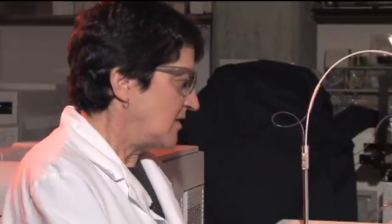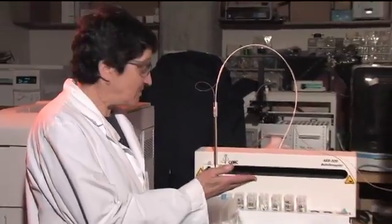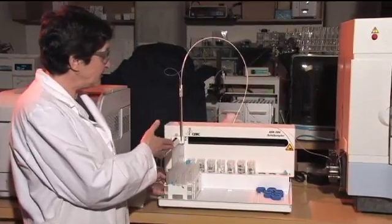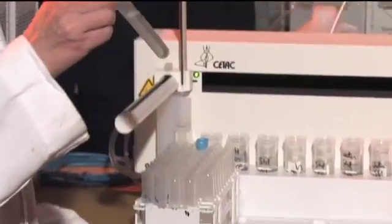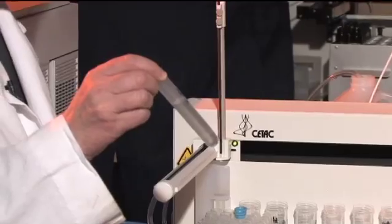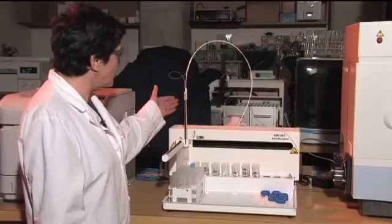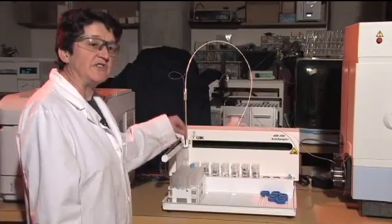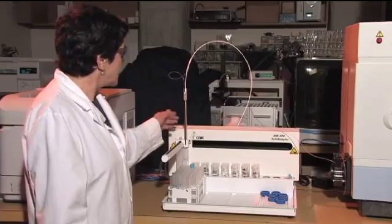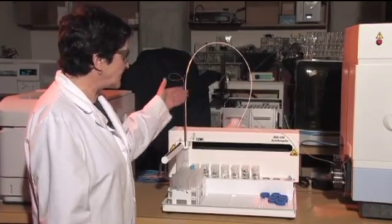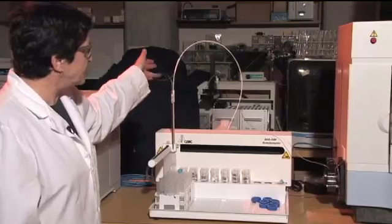So after you do your sample preparation, you want to get your samples into the ICP. So we have a sampler here. You put your samples in a test tube and load it onto the sampler. And this sampler has a probe in it that will go to each of these tubes and get some sample. It has a peristaltic pump. So it'll pump the sample through this tubing.